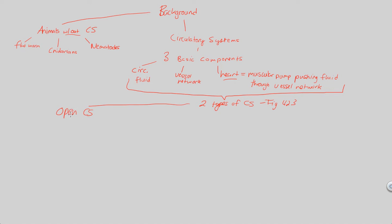An open circulatory system is usually found in organisms like arthropods, which include insects, and mollusks — with the exception of cephalopods, which have a closed circulatory system. In an open circulatory system, the circulatory fluid is called hemolymph. Hemolymph is also known as ISF, or interstitial fluid, which bathes the tissues. So we have this fluid circulating throughout the open circulatory system.